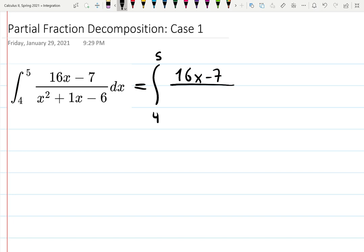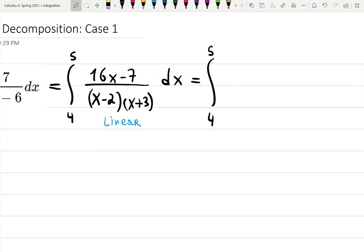And I will do it as x minus 2 times x plus 3. Review my another video of how I'm doing this factoring. This is indeed case 1 because all those factors are linear and they are not raised into any exponent like cube or 5, and they're not quadratic. So we can write it down as integral from 4 to 5, A over x minus 2 plus B over x plus 3 dx.